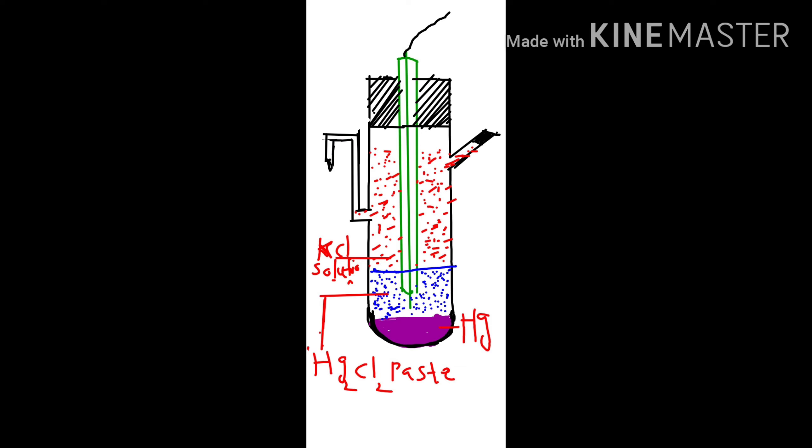At the bottom of this calomel glass tube, mercury is kept. Above this mercury, mercury chloride paste is kept. This mercury chloride is also known as calomel. Above this calomel, KCl solution is added to the side tube shown on the right side of the figure.